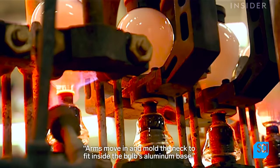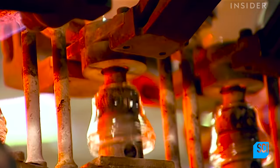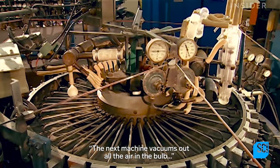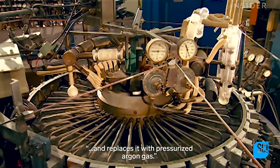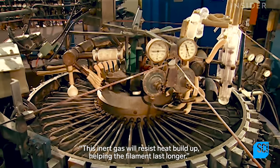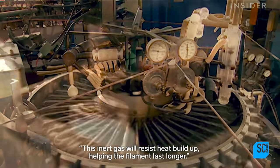Arms move in and mold the neck to fit inside the bulb's aluminum base. The next machine vacuums out all the air in the bulb and replaces it with pressurized argon gas. This inert gas will resist heat buildup, helping the filament last longer.